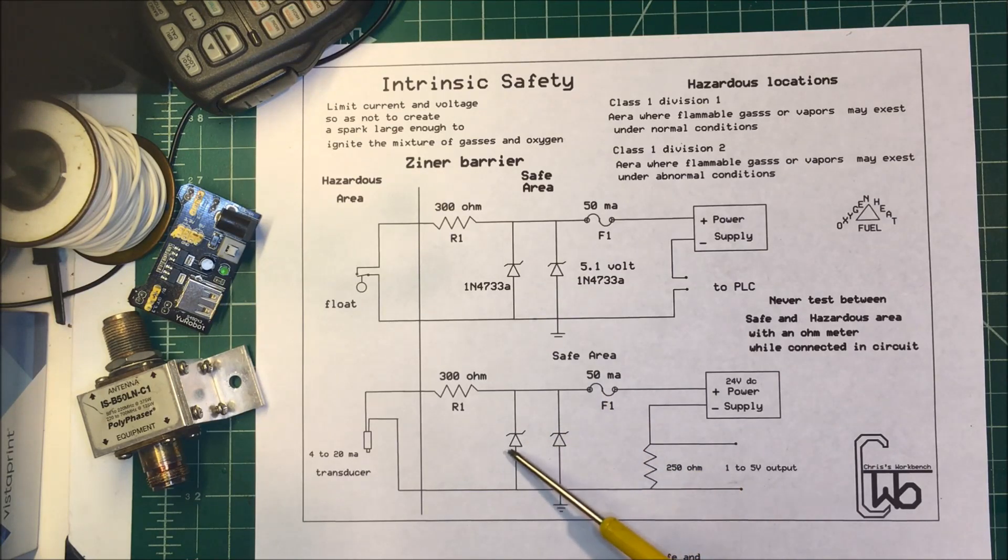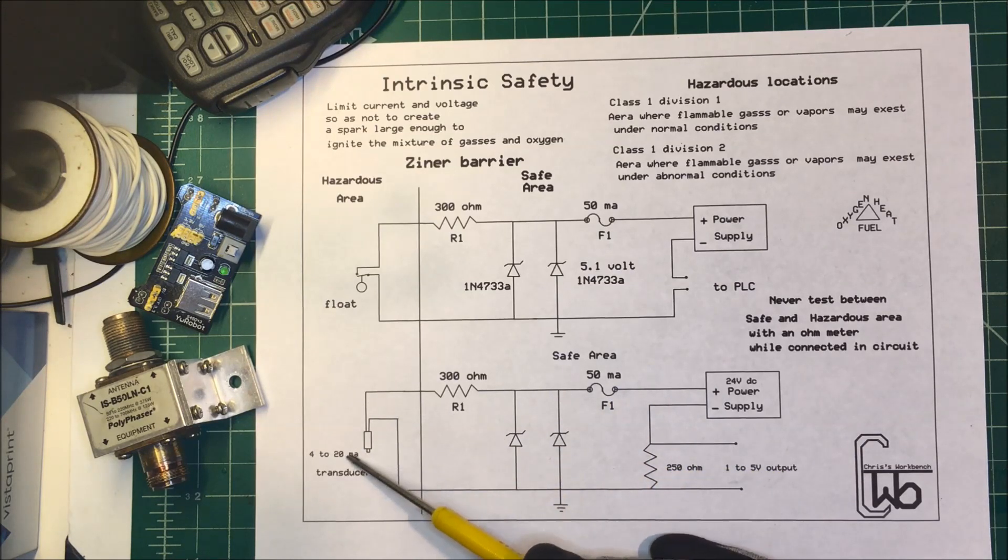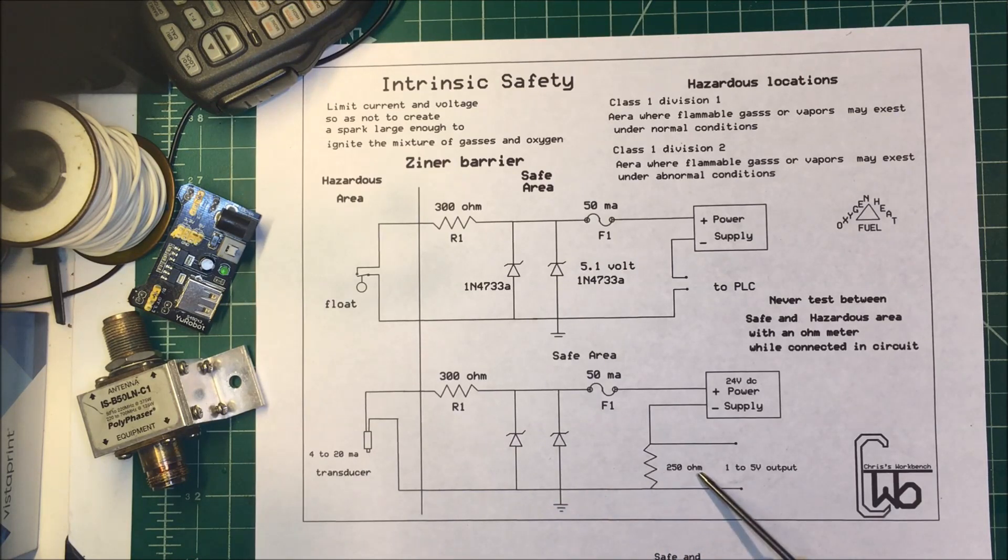And then a resistor to limit the current. In this case, we're running power through here. This puts out 4 to 20 milliamps and we come back to a 250 ohm resistor.